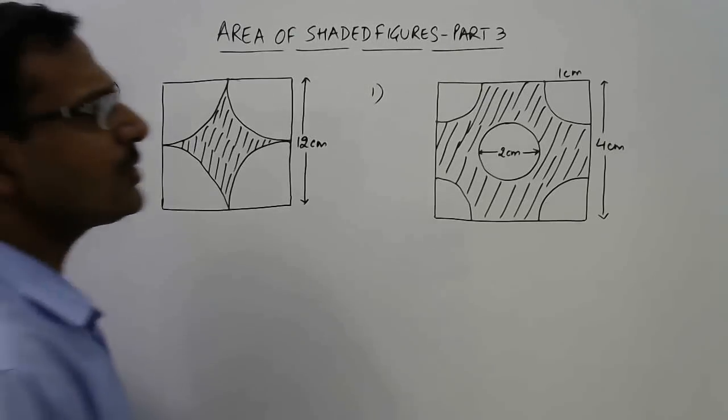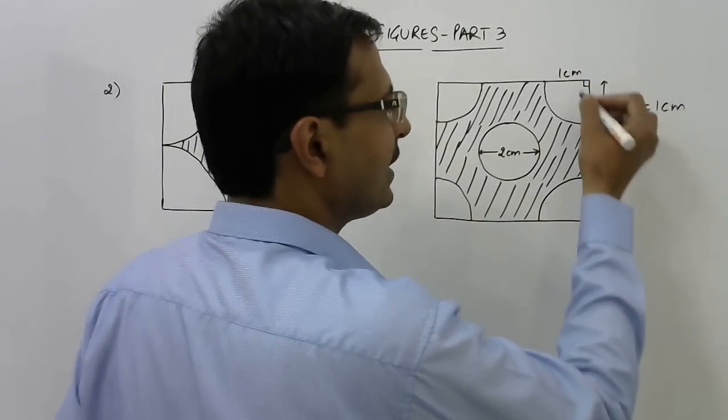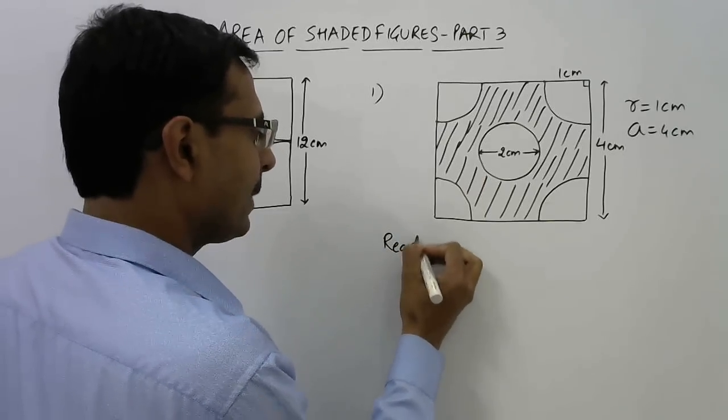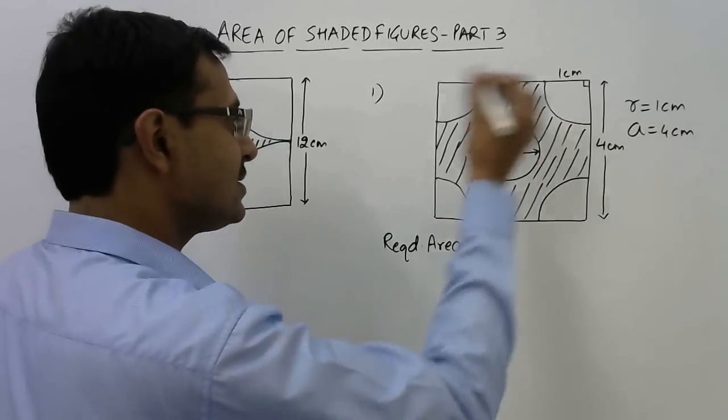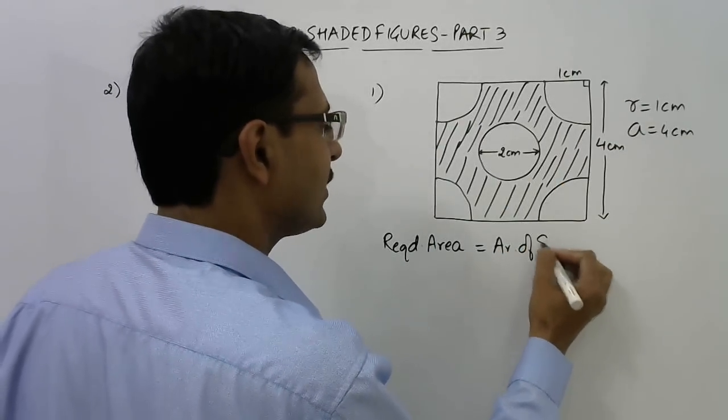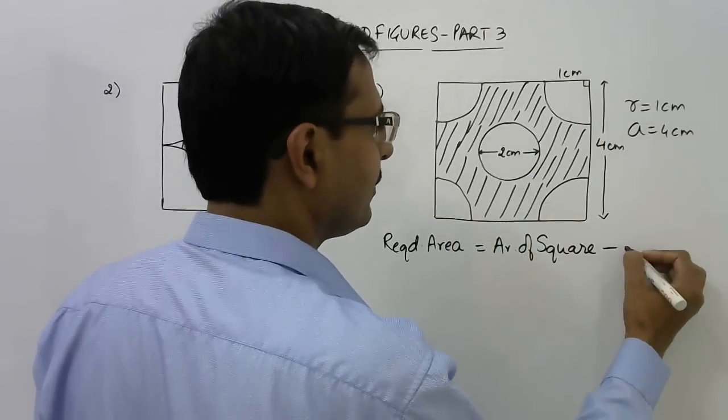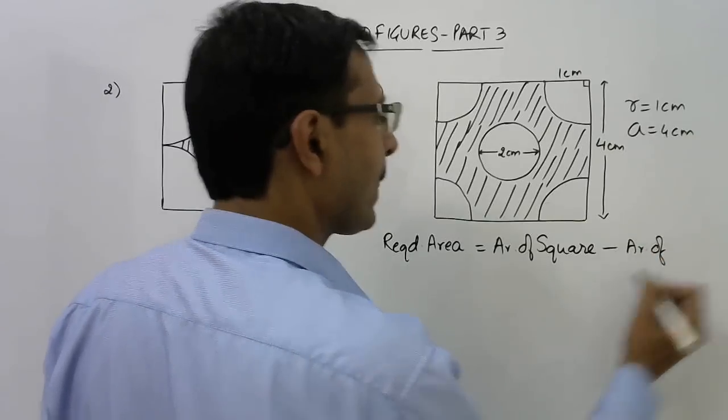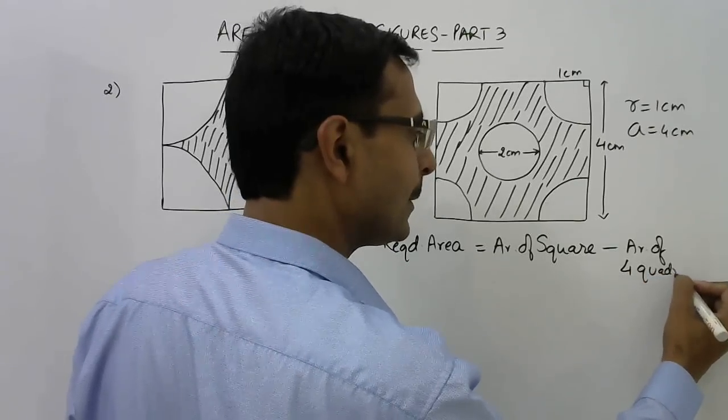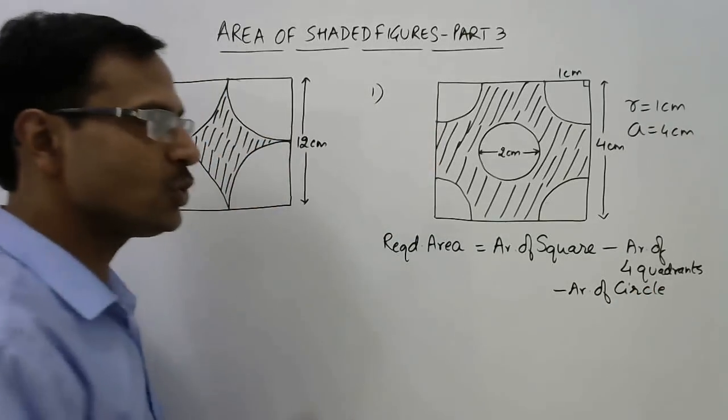These are very simple questions. Just a little bit of understanding of areas of figures related to circles is required. This is actually a quadrant of radius one centimeter, and the side of the square is four centimeter. When we have to find the required area, whenever a part is unshaded and other part is shaded, required area is found by taking the area of the large figure, that is the square, and subtract the area of the unshaded figures. What is the unshaded part? Area of four quadrants and area of the circle in the middle.